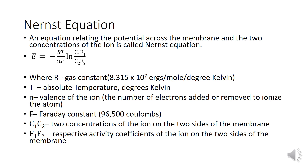The Nernst equation is: E = −(RT / NF) × ln(C₁F₁ / C₂F₂), where R is the gas constant with a value of 8.315 × 10⁷ ergs per mole per degree Kelvin, T is the absolute temperature in degrees Kelvin, and N is the valence of the ion.